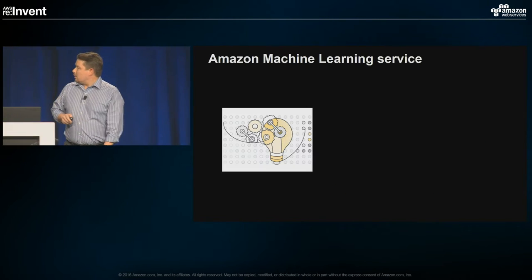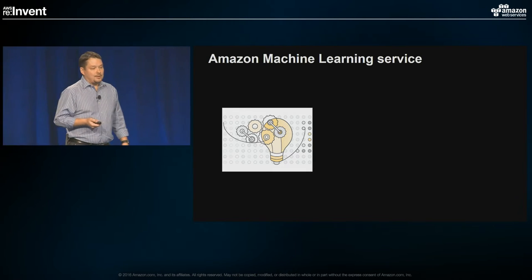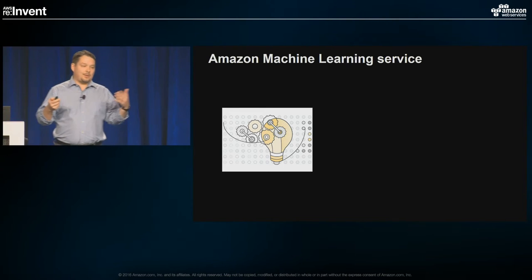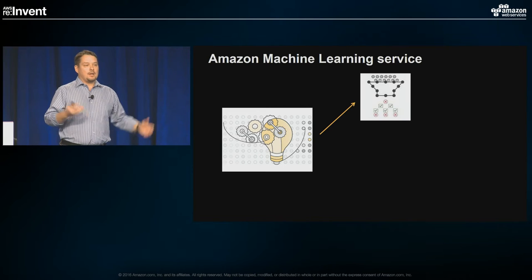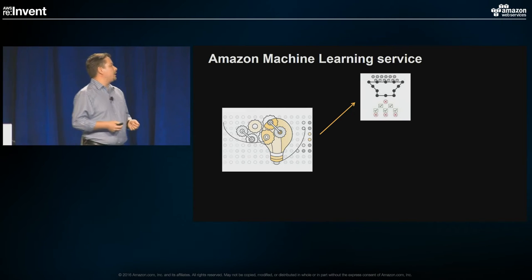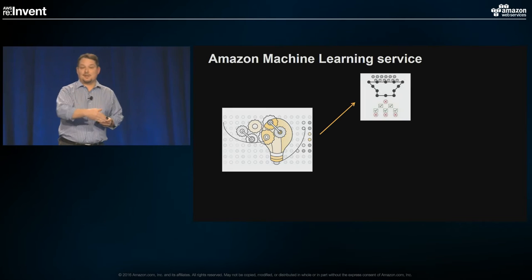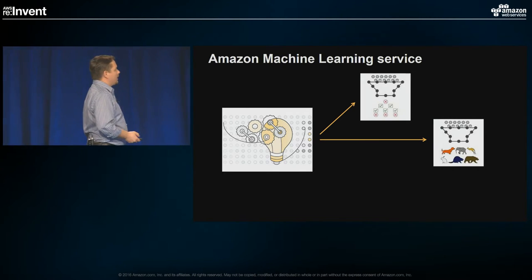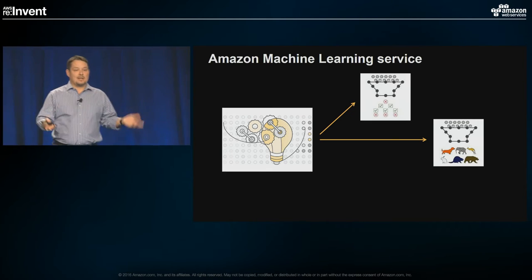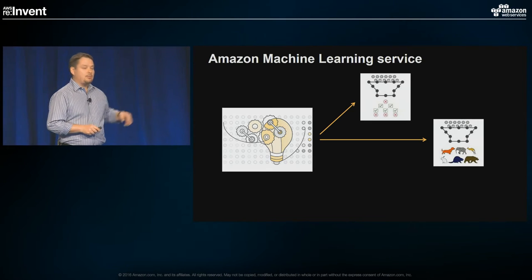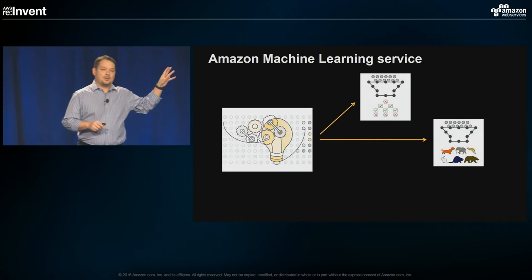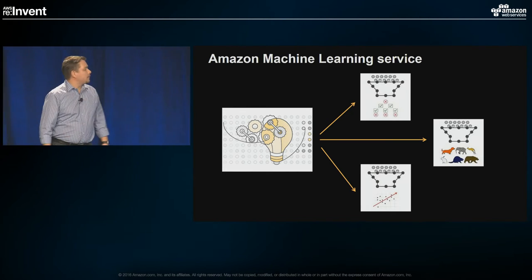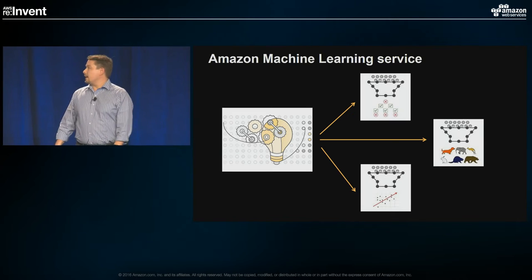Moving along to Amazon Machine Learning Service, it allows us to address three types of problems. First is binary classification, where given a new input we say true or false. In the case of churn, this is exactly what we'll use — this customer will leave the platform, or this customer will not. A slight generalization is multi-class prediction. With binary classification, there are some nicer visualizations — you'll see an example in the console. And of course there's also numeric regression as another kind of problem.